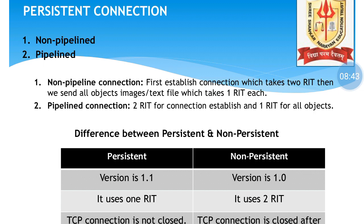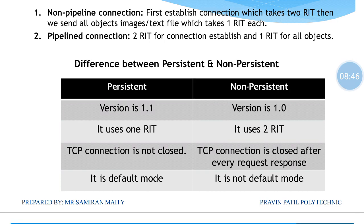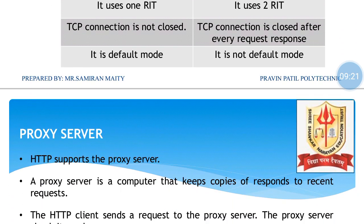The difference between persistent and non-persistent: persistent uses HTTP version 1.1 and 1 RTT, while non-persistent uses version 1.0 and 2 RTTs. In persistent connections, the TCP connection is not closed. In non-persistent, the TCP connection is closed after every request-response cycle. Non-persistent is the default mode.